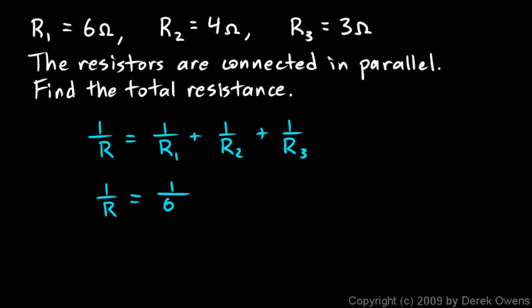And R2 is 4 ohms, so 1/R2 is 1 over 4 ohms. And R3 is 3 ohms, so 1/R3 is 1 over 3 ohms. So those ohms are all in the denominator, and that should make sense because the R is in the denominator.